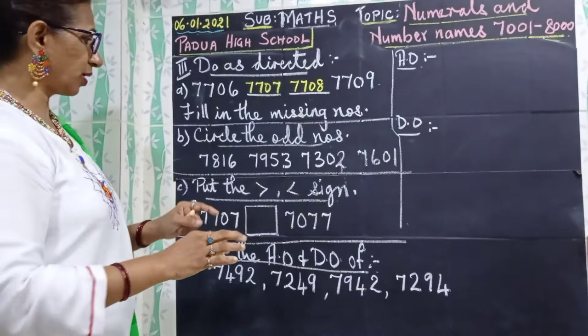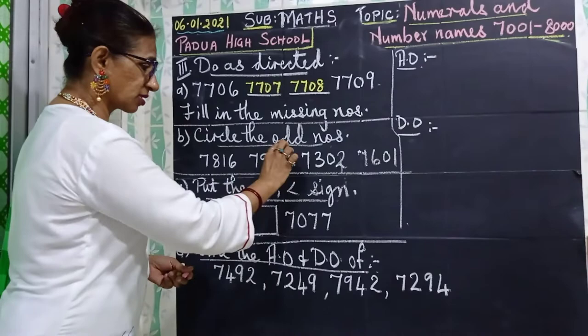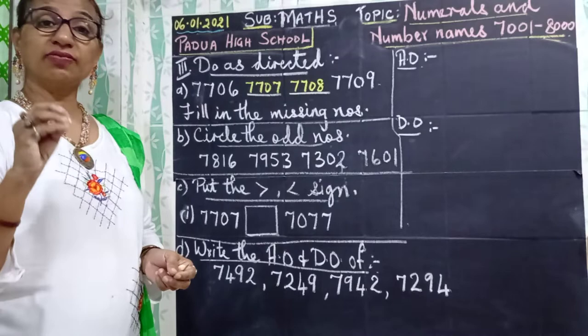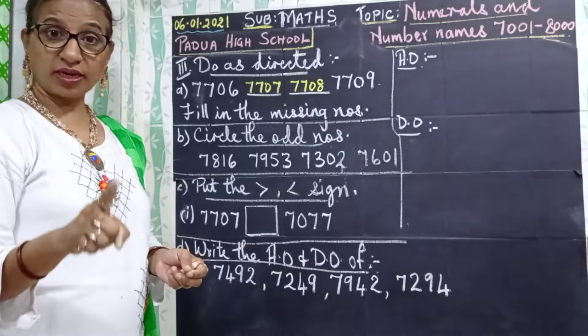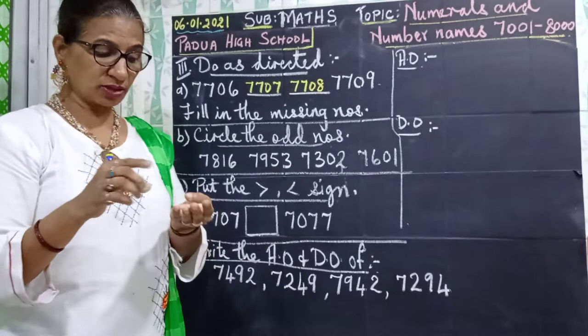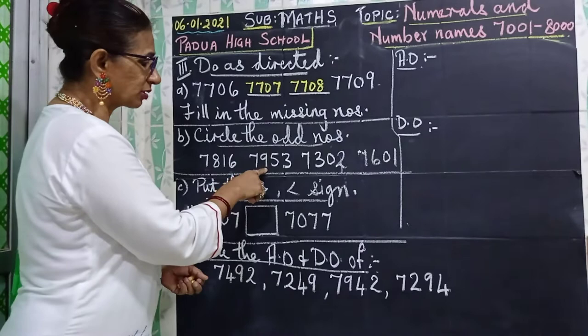Here, circle the odd numbers. What are odd and even numbers? In the units place — if the numbers are 2, 4, 6, 8, and 0, then that is an even number. Now if in the units place you have 1, 3, 5, 7, or 9, those are odd numbers. Now let us see: 7816 — in the units place there is 6, so it is an even number. 7953 — there is a 3, so it is an odd number. So circle the full number.